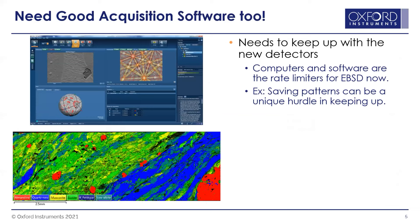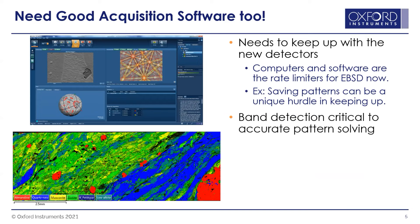When you introduce new hardware, you've got to introduce good software to keep up with it. The computer is starting to become the rate limiter in terms of speed for EBSD now — it's a matter of getting that much data through the processes. A lot of people love to save patterns so they can re-index data, so how can we actually keep the system moving with appropriate speed?